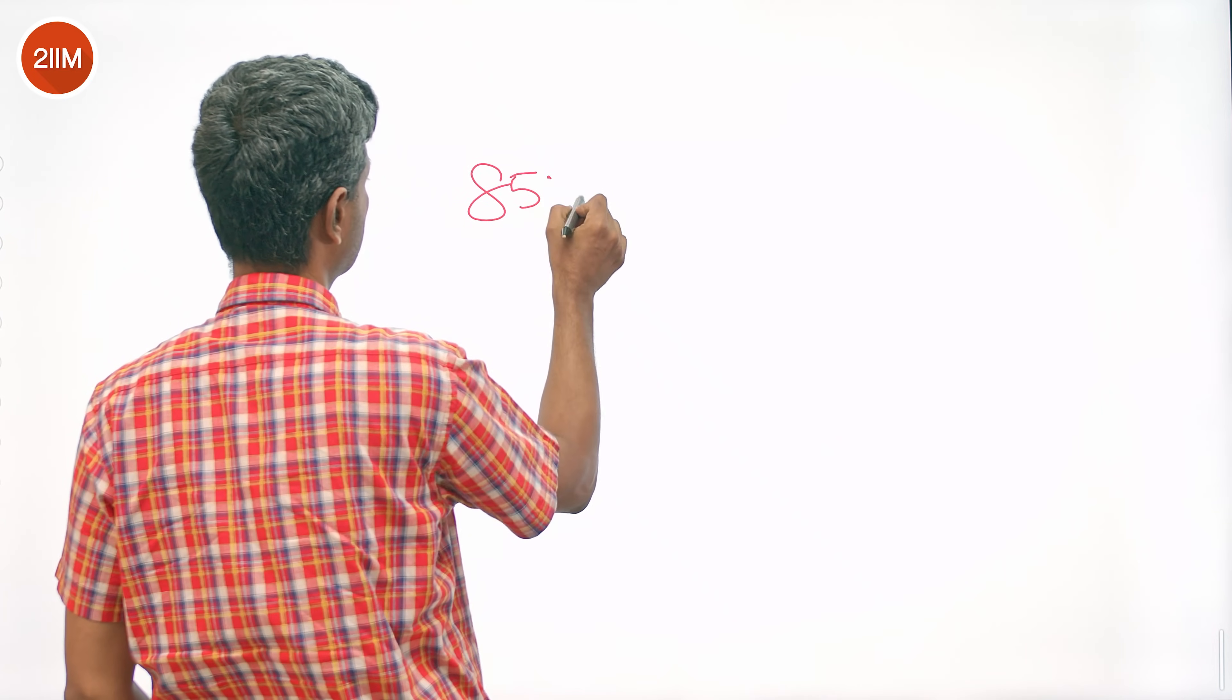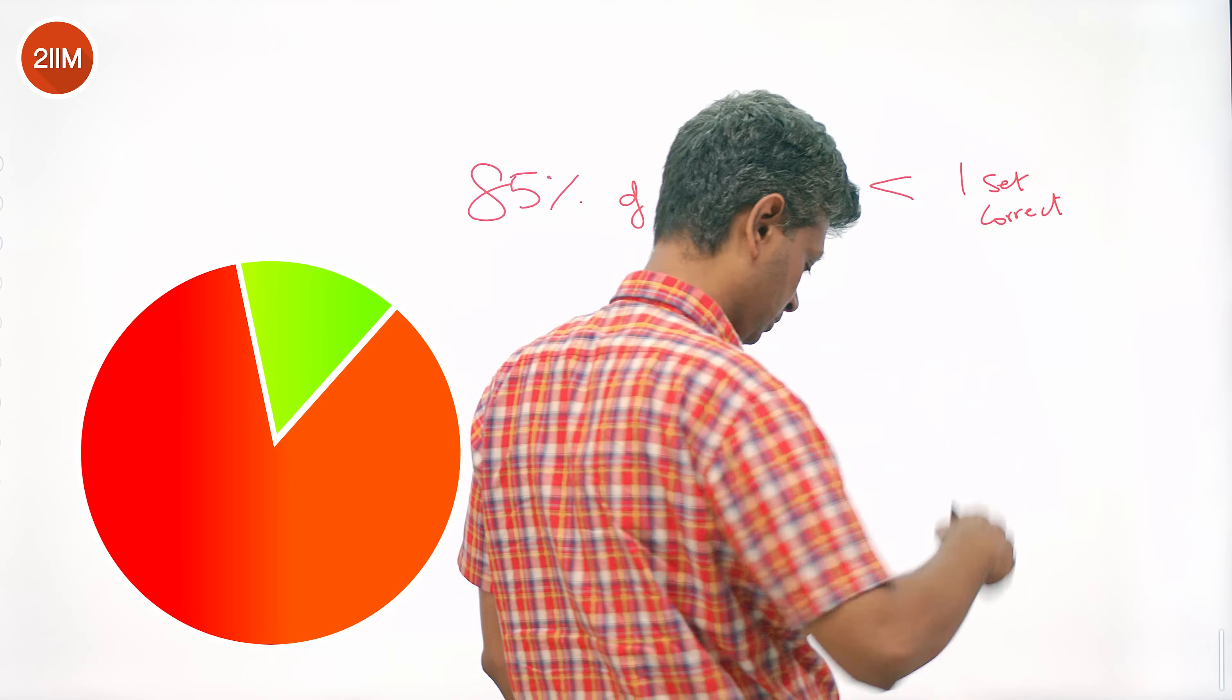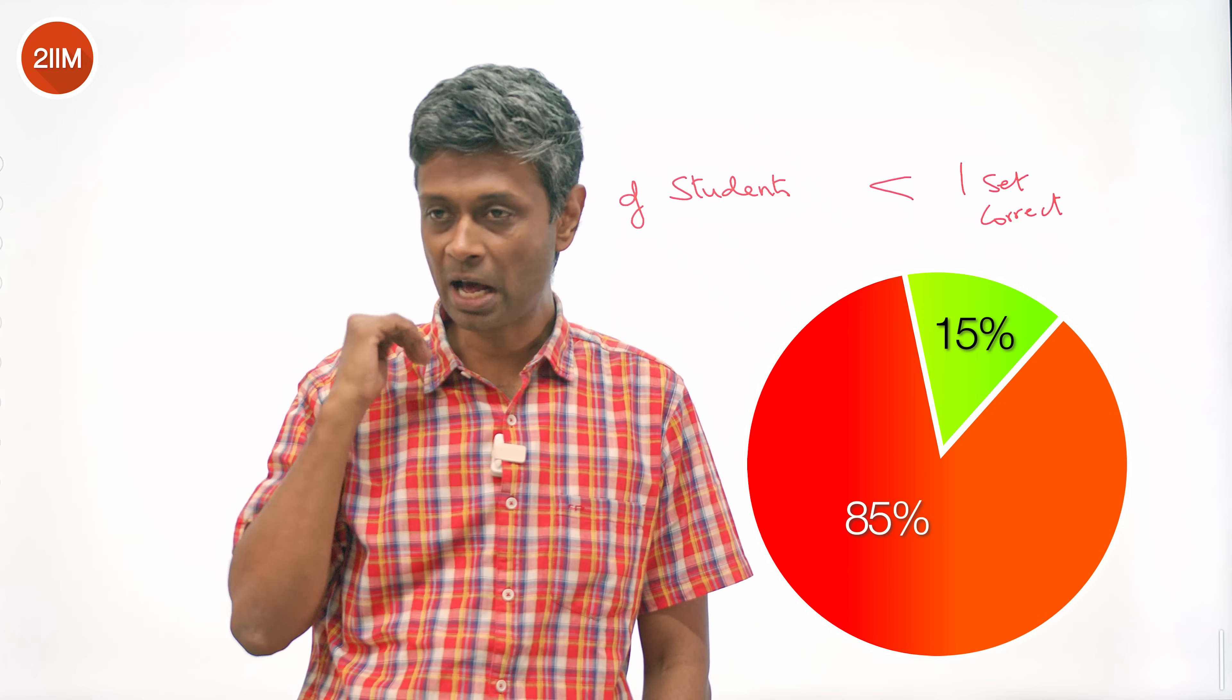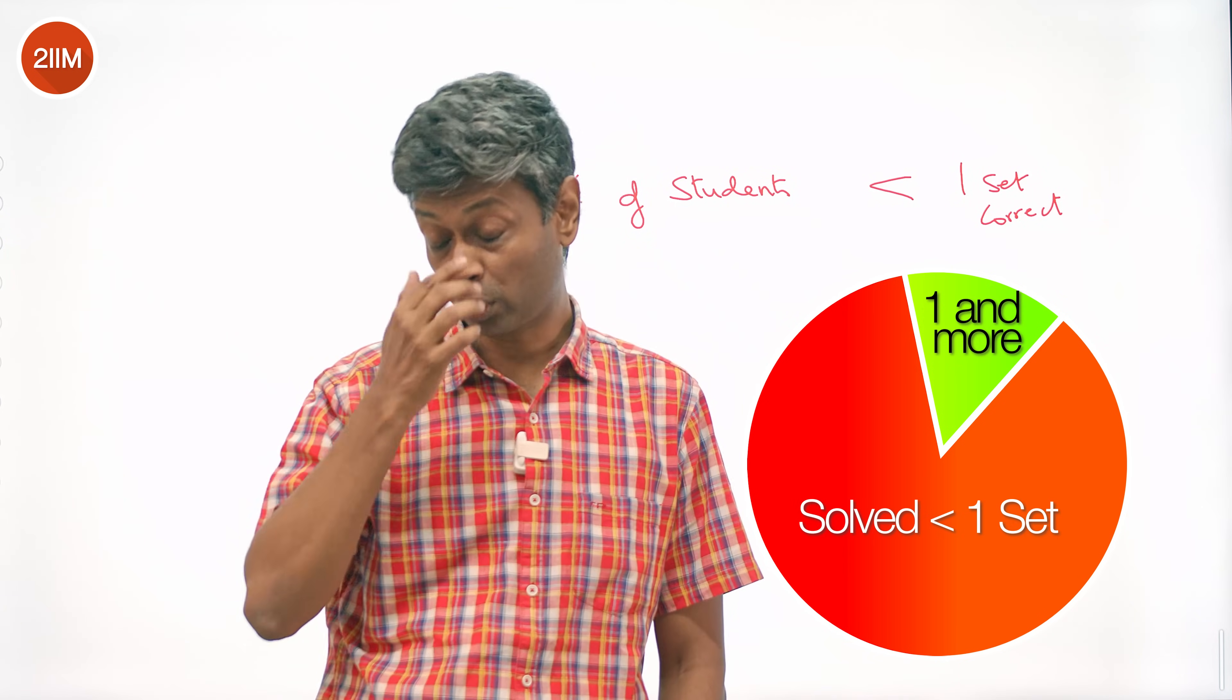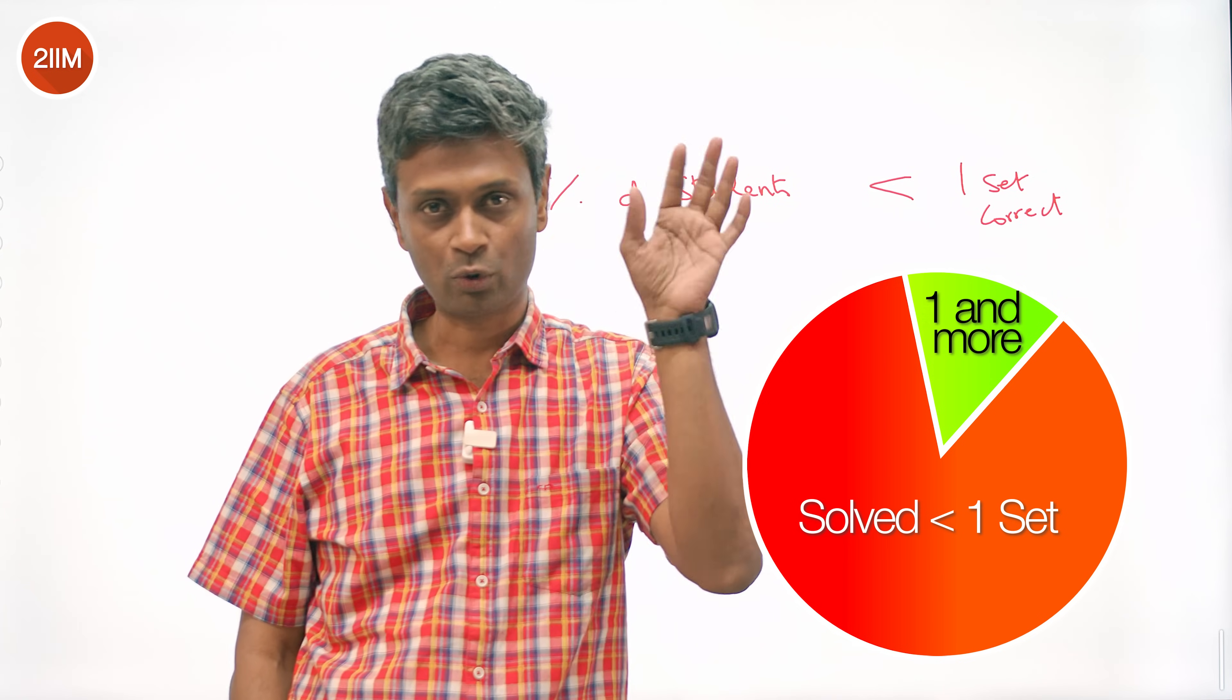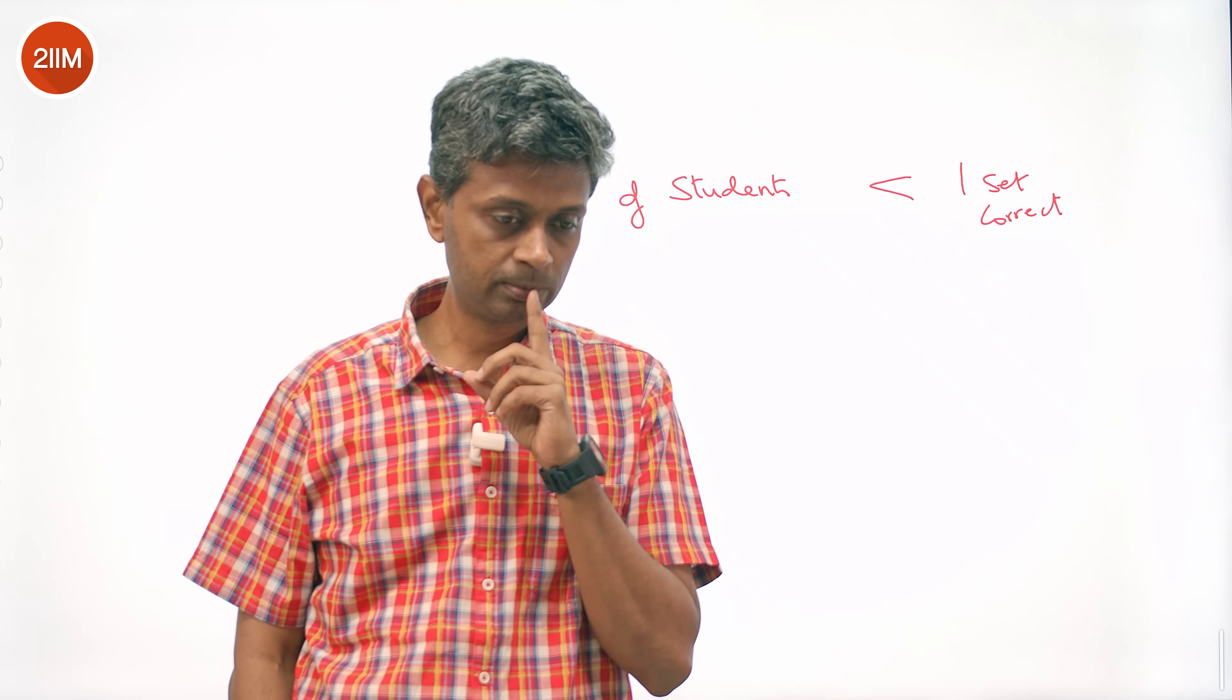Typically 85% of students get less than one set correct. What I mean is less than one set in LRDI puzzle. You get a set, you get five questions right or four questions right. Typically 85th percentile has been a mark which is less than this. So 85% of the students spend 40 minutes inside the exam hall in that section and come off without having cracked even one puzzle out of the five or four that are presented. So it's a sobering thought and it speaks to how tough this section is.